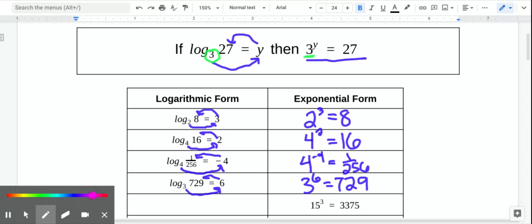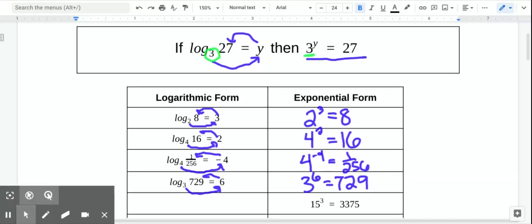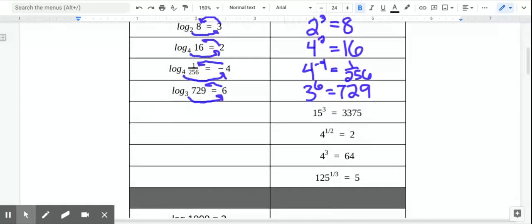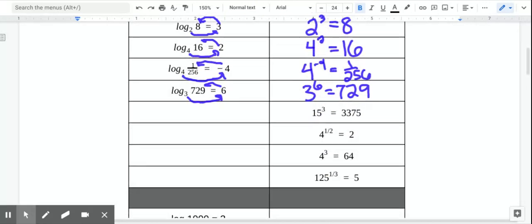So now we want to go the other direction. I've given you exponents, and we want to turn them into logarithms. So the base, it's going to be log base 15, and then the exponent goes over here. So log base 15 of 3,375 equals 3.